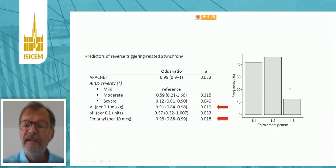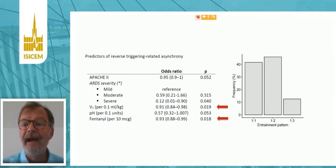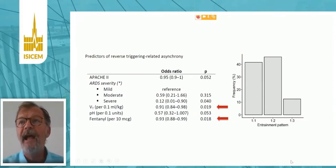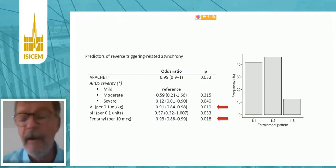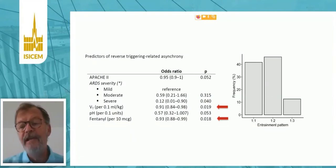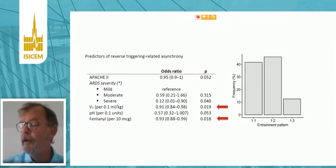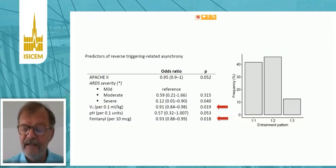On the right, you can see the entrainment pattern. One-to-one means that you have a reverse triggered effort at every mechanical insufflation. One-to-two means that every other mechanical insufflation, you see this reverse trigger pattern. One-to-three means it's one every three breaths. You see that most of the time it's either one-to-one or one-to-two, but it's clear that you can see different patterns. It seems to still be the same mechanism.